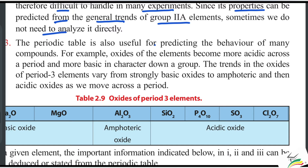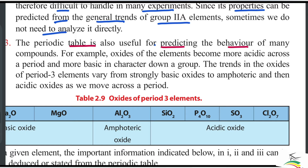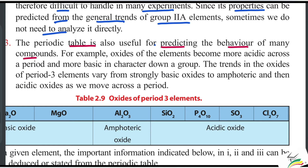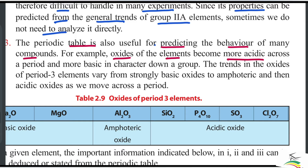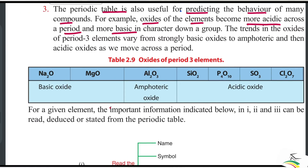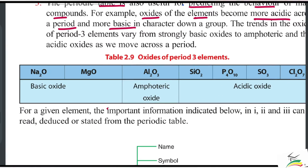The periodic table is also useful for predicting the behavior of many compounds. If you have a group of compounds, you can predict their properties. For example, oxides of the elements become more acidic across a period and show more basic character down a group.